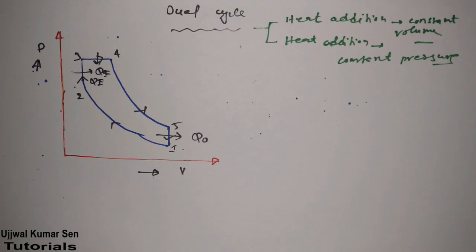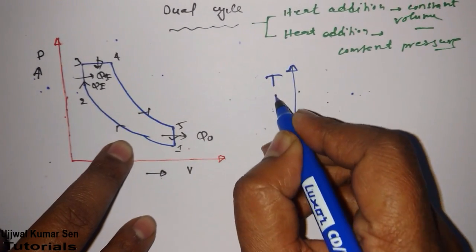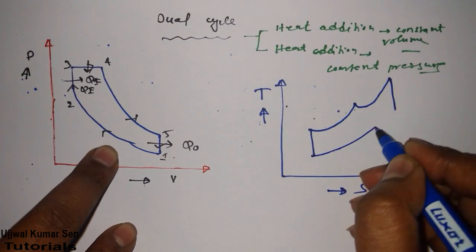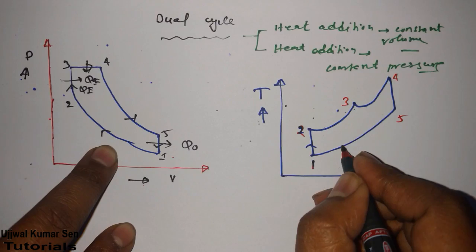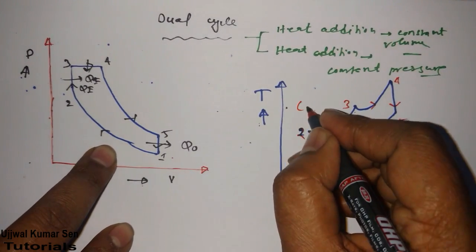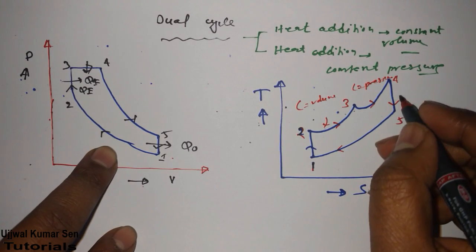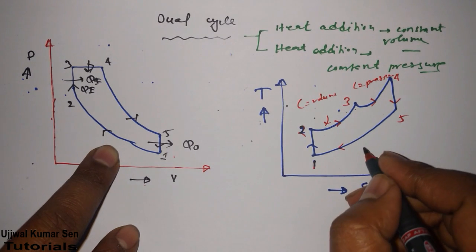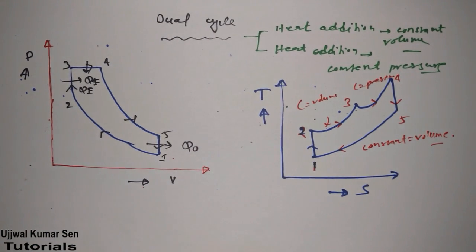Now let's draw the TS diagram, which is also important. In many university examinations, questions are asked from the TS diagram because students are less familiar with it. On the TS diagram, the points go 1, 2, 3, 4, 5. Process 1→2 is isentropic, 2→3 is constant volume, 3→4 is constant pressure, 4→5 is isentropic expansion, and 5→1 is constant volume.